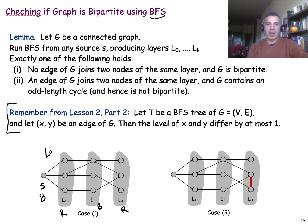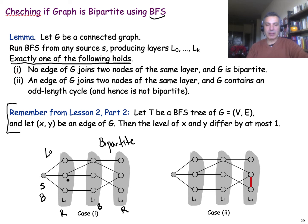Exactly one of the following properties will hold. Either there is no edge between two nodes of the same layer — in that case the graph is bipartite, since all edges are between nodes of successive layers. Or there is one or more edges between nodes of the same layer, in which case the graph must be non-bipartite.